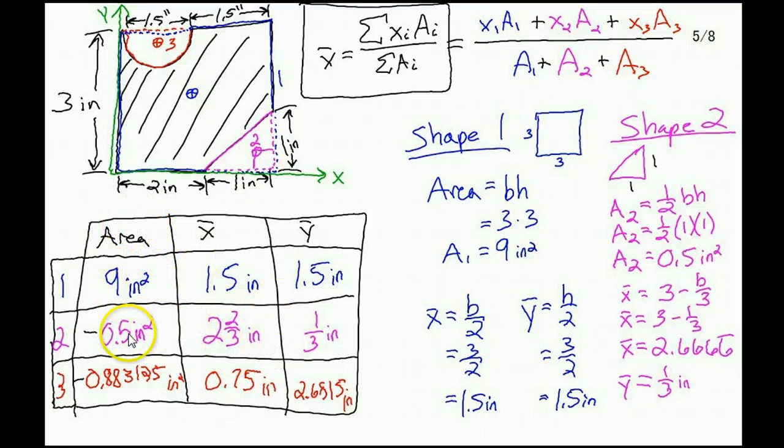I like to set up a table where I have my areas, my shapes in different rows, my x-coordinates, my y-coordinates. I highly suggest organizing your work very carefully because there's a lot of numbers to deal with. For the first one, our 3 by 3 square, this is symmetrical so the centroid should be right in the middle. So it should be 1.5 by 1.5, half the base, half the height. The area is side squared, so 9 inches squared.